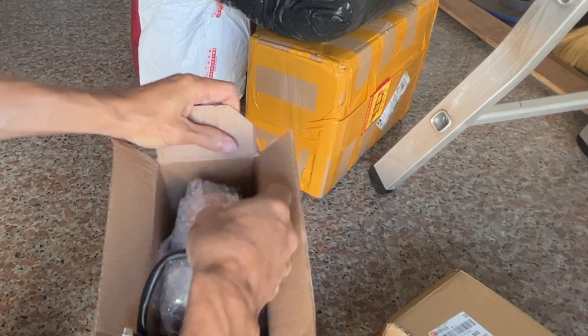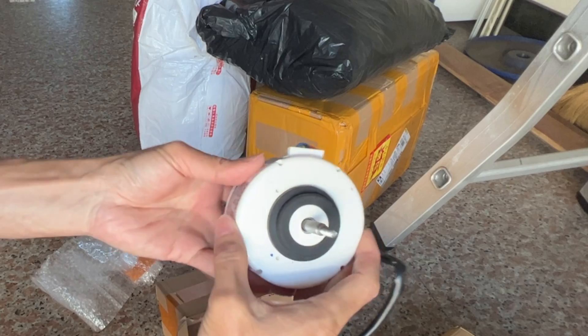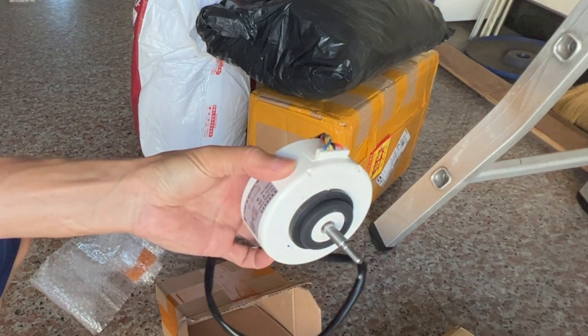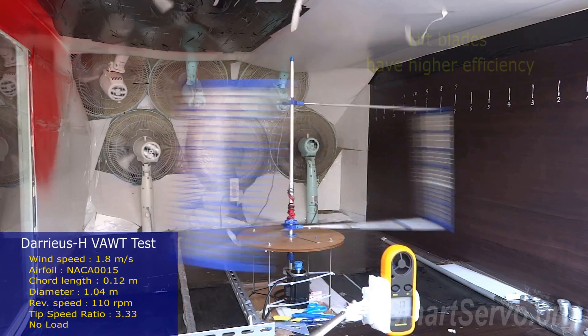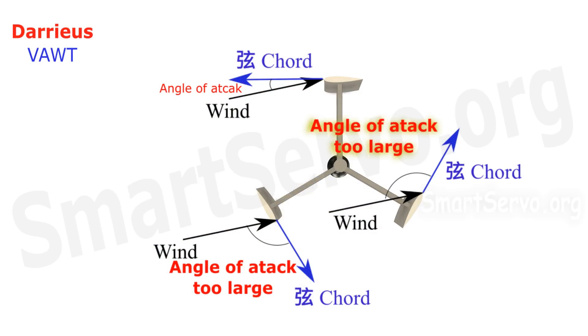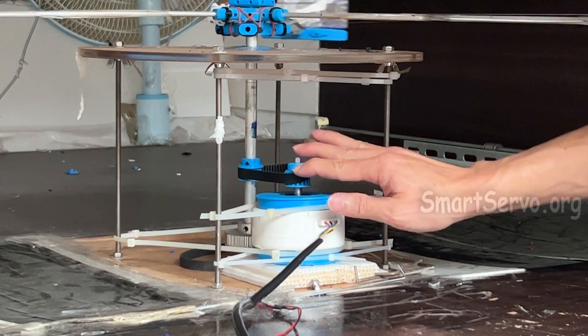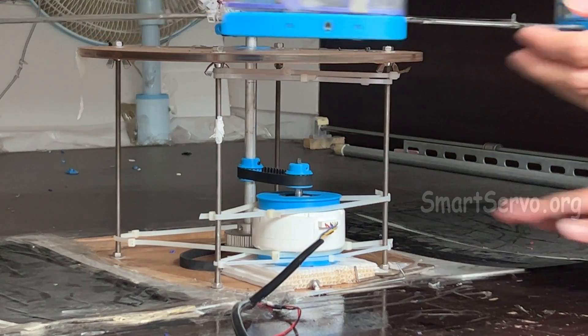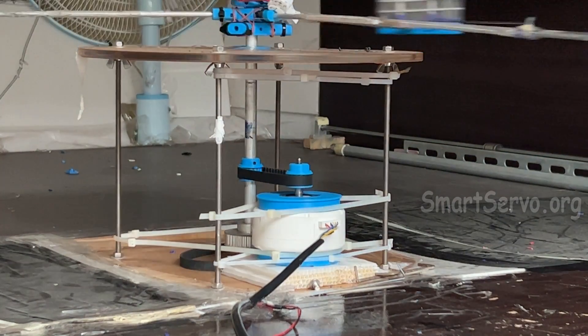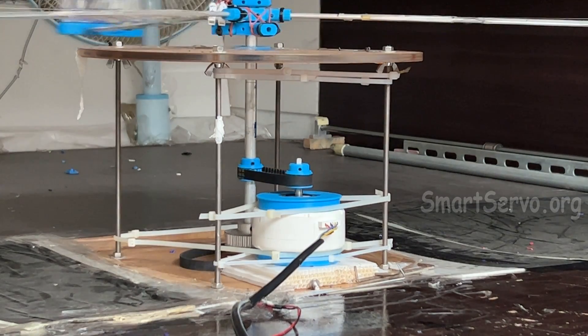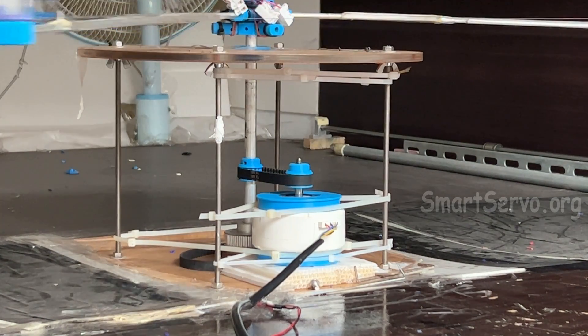The package arrived. The main shaft is a little tight. Although the Darius wind turbine is highly efficient, it is not easy to start on its own. This motor can be used to start the wind turbine, and when the speed is sufficient, it can be used as a generator, killing two birds with one stone.